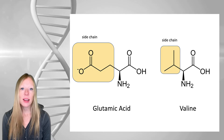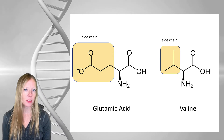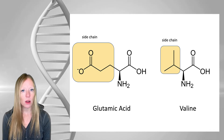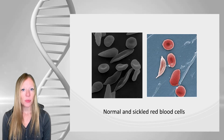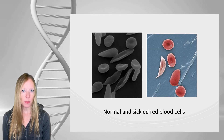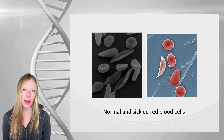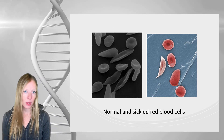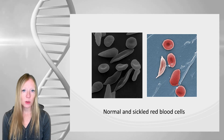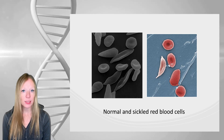And this, in fact, is what happens. If a person has two copies of this mutated allele, then they will have a disorder called sickle cell disease. Not only does it change the shape of the beta-globin subunit of the hemoglobin protein, it can actually change the shape of the red blood cells that carry this hemoglobin from the normal beautiful biconcave shape to this rigid sickle shape.